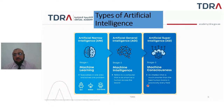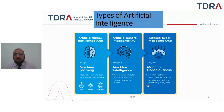Then we have Artificial Super Intelligence, which is basically machine-conscious artificial intelligence with an intellect that is much smarter than the best human brains in practically every field. That is theoretical and has yet to be achieved.